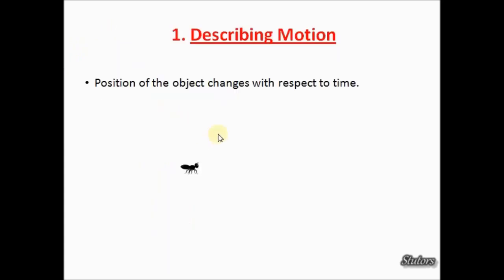First, let us describe what motion is. An object is said to be in motion when its position changes with respect to time — that is, when you see that an object is at different positions as time passes by.